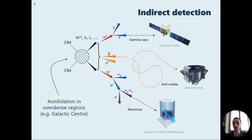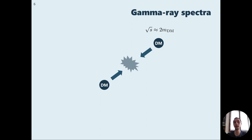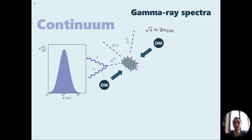Indirect Detection studies the products of annihilation of dark matter in over-dense regions of the galaxy. We can have different final states: neutrinos, antimatter for example, or gamma rays, which would be the main focus of this talk. In particular, we can have different ways to produce gamma rays from dark matter annihilation. Dark matter annihilates at a very low velocity, so basically the center of mass energy is equal to double the dark matter mass.